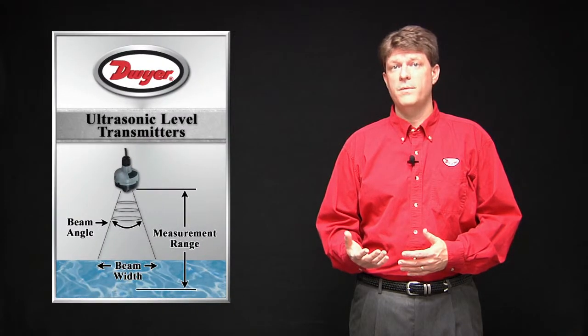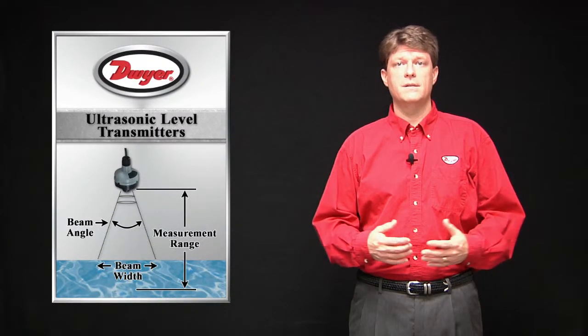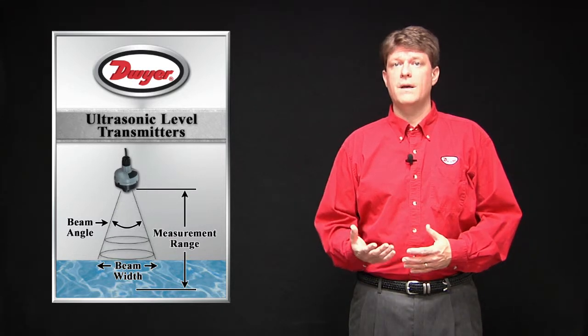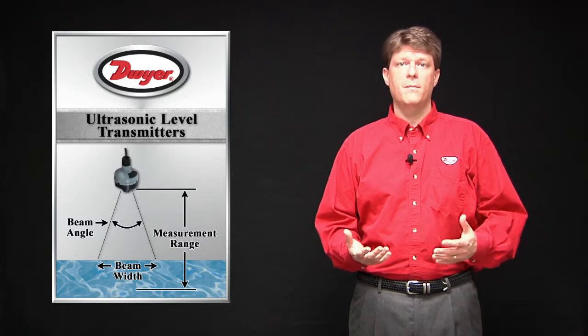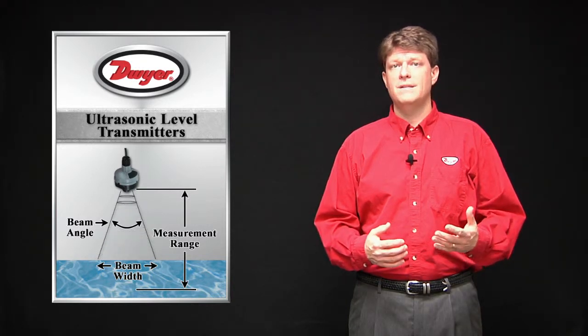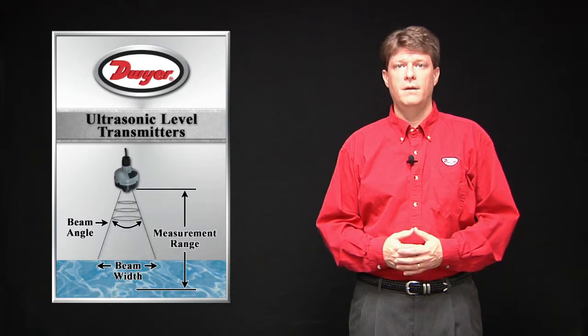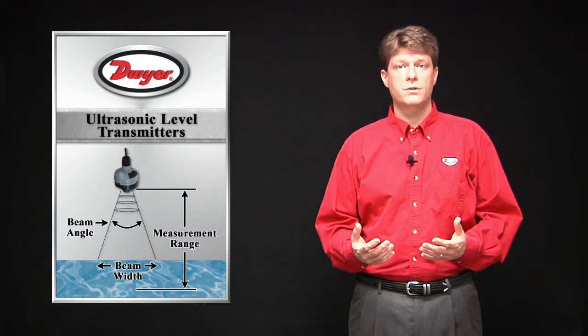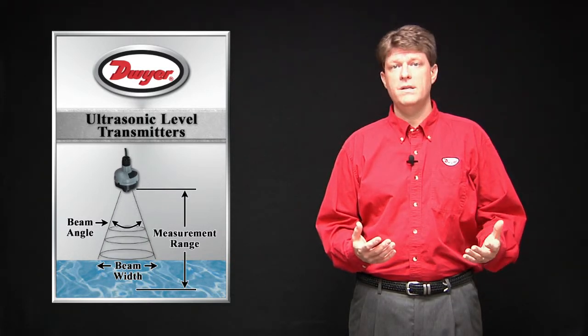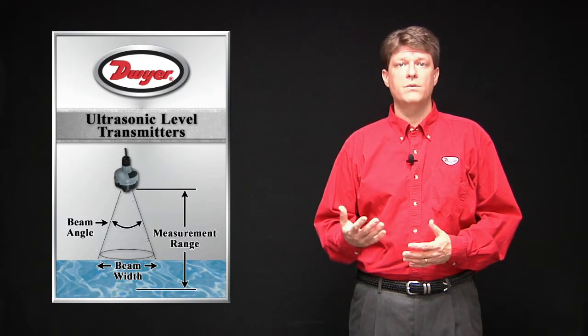The ultrasonic pulse from the transducer spreads out in a conical shape as it travels away from the sensor. This is referred to as the beam angle and is typically from 8 to 12 degrees. The beam width is the width of the sensing area that the sound pulse hits and reflects off of. If intrusions or obstructions are in the way of the pulse before it reaches the liquid surface, false echoes can be created, resulting in bad readings.